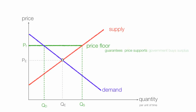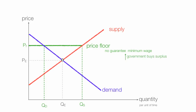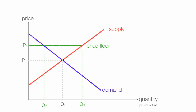There are really two types of price floors. There's one where the government guarantees price supports and the government buys the surplus. Another type is where the government doesn't guarantee the price floor — it doesn't guarantee to buy the excess, such as with minimum wage laws. So the question becomes: does the government buy the surplus or not?